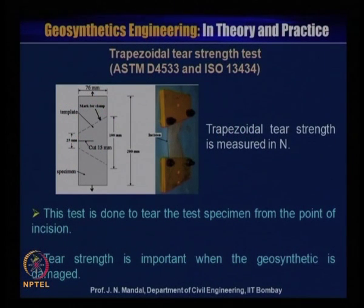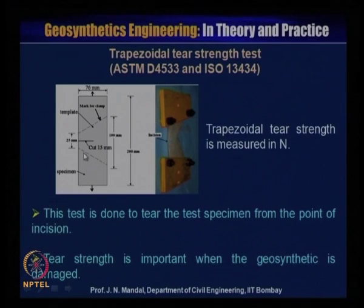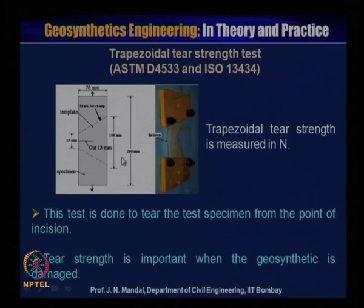Trapezoidal tear strength test per ASTM D4533 and ISO 13434: tear strength is measured in Newtons. The sample is 200 mm × 100 mm trapezoidal shape with a 15 mm cut at the incitation point. The specimen is clamped and the test tears the specimen from the initiation point. Tear strength is important when geosynthetics is damaged.